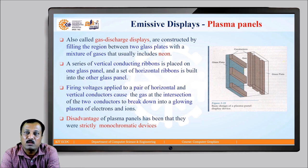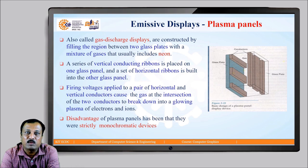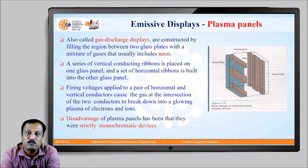As shown in the figure on the left side of your screen, there are two glass plates and a gas, usually neon, sandwiched between them. A series of vertical conducting ribbons is placed on one glass plate and horizontal ribbons on another. By applying sufficient voltage to a pair of horizontal and vertical conductors, the gas at their intersection breaks down into a glowing plasma of electrons and ions, producing a visible glowing dot on the surface of the plasma panel display device.